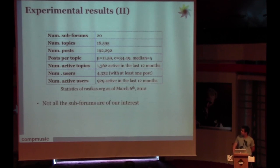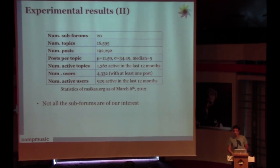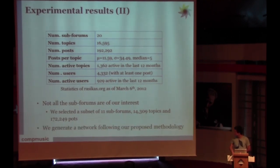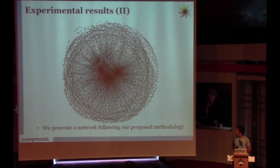One thing is that not all the sub-forums are of our interest, because there is a sub-forum in rasikas.org that talks about Hindustani music. If we want to analyze Carnatic music, we are not going to use this sub-forum. We basically selected a subset of 11 sub-forums, which included 14,000 topics and 170,000 posts. And we finally generate a network, following all the methods that I described.